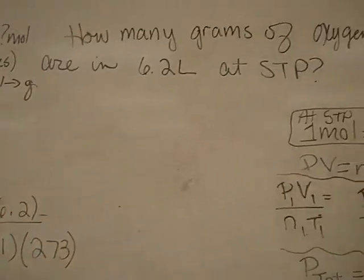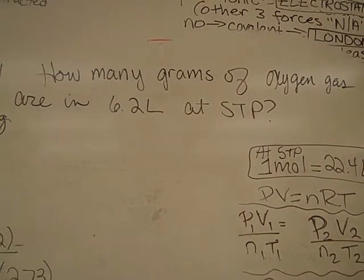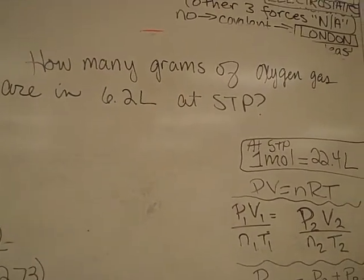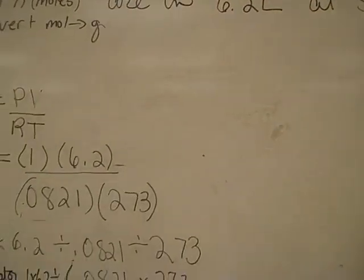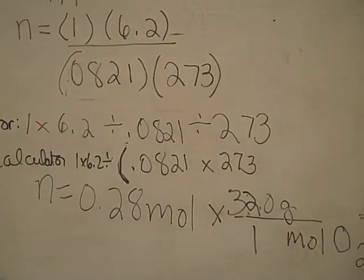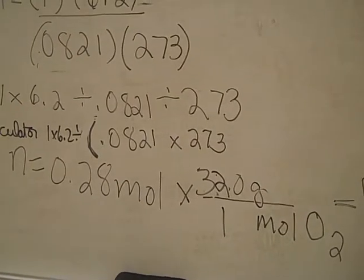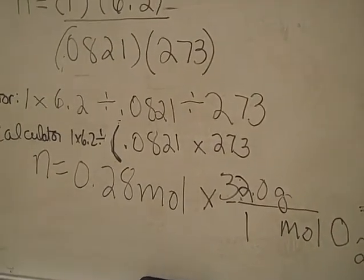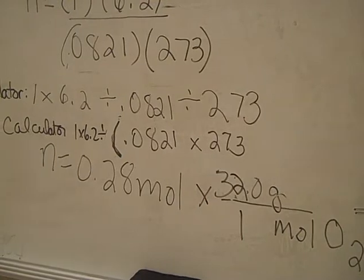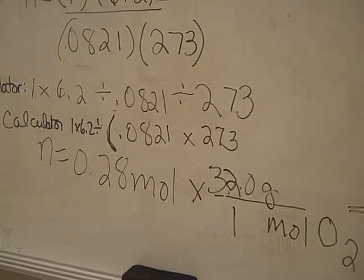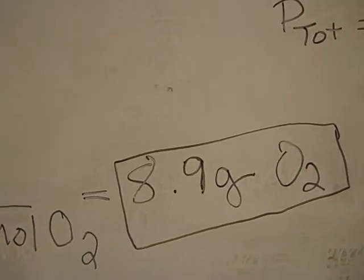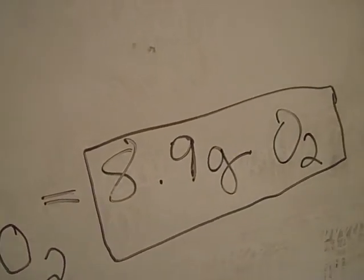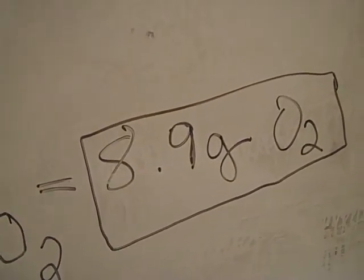It told us it was oxygen gas. Oxygen gas is one of my super seven elements. Oxygen exists as a diatomic molecule, O2. If you have one mole of O2, you take two times the 16 grams for one oxygen. And when we multiply those together, we get 8.9 grams of O2 are in a 6.2 liter container at STP.